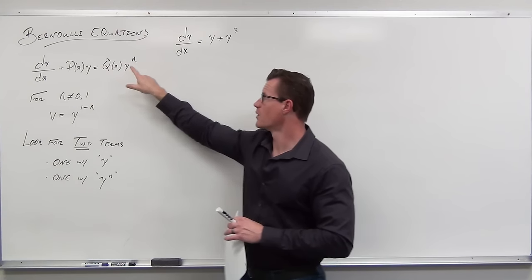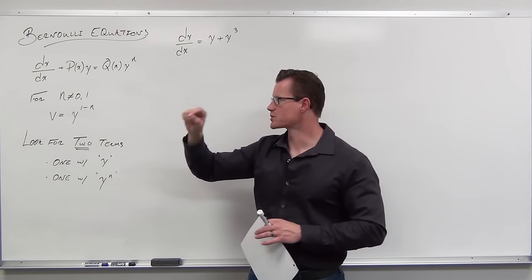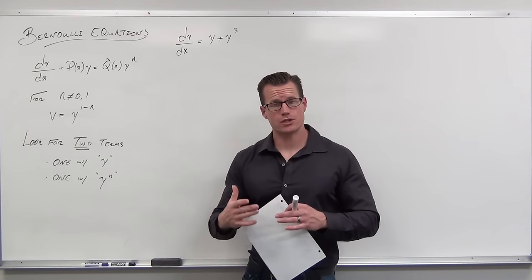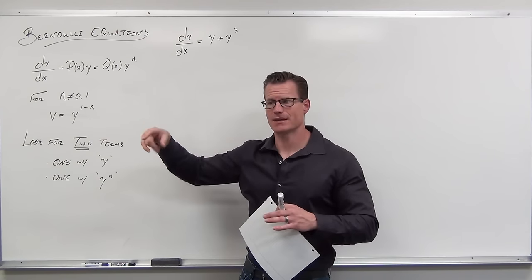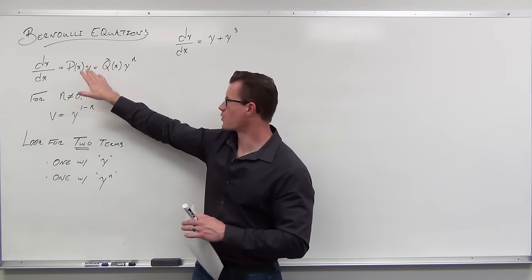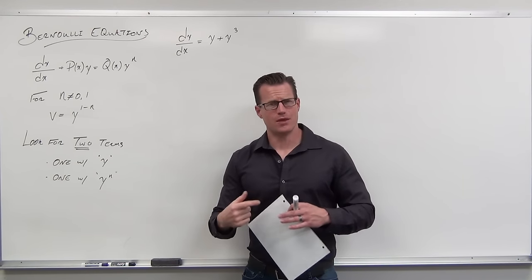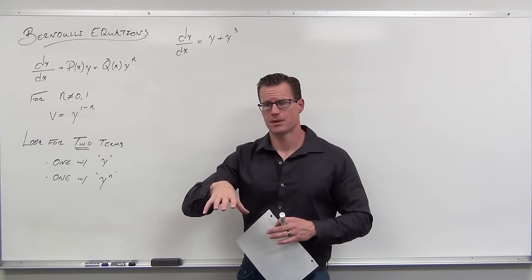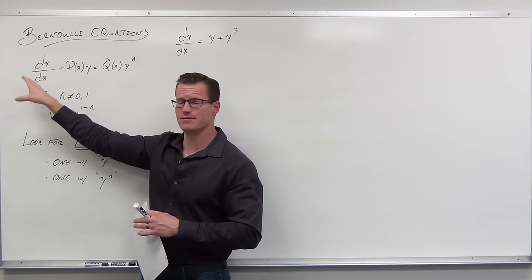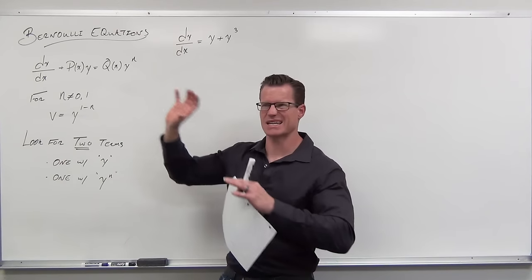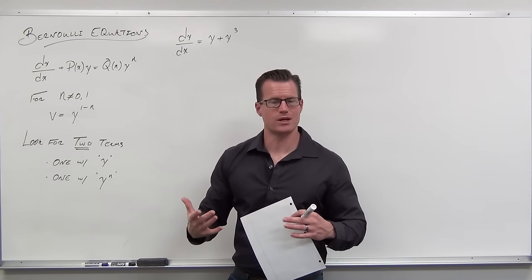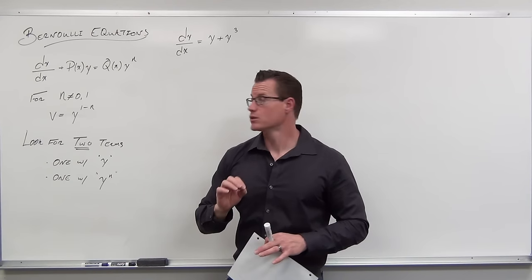What we're looking for is y to the first power, y to any other power. We're going to make the substitution v equals y to the one minus n. Like every other substitution technique, we're going to solve this for y, take the derivative dy/dx, make a substitution for dy/dx, for y, and for y to the nth power. Then we multiply to get rid of whatever piece is here, which will change to v to the first power — and then it's linear, and we use linear differential equation techniques.